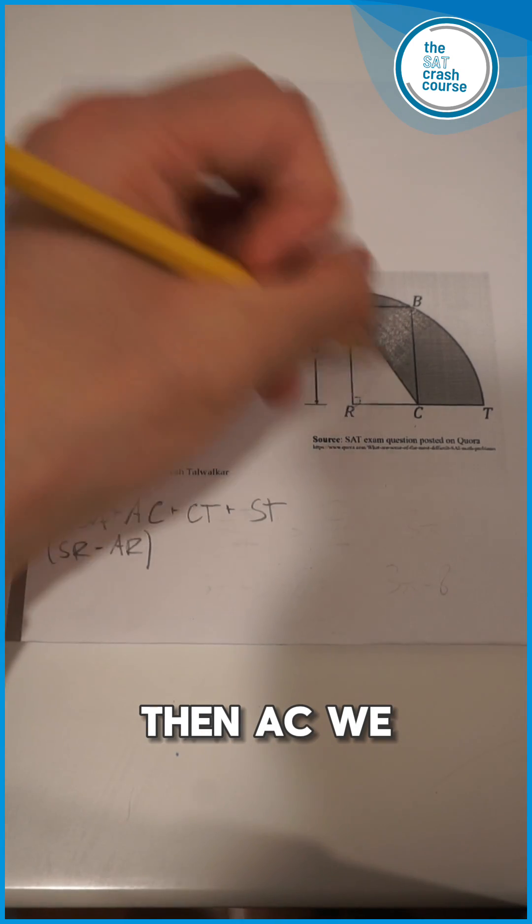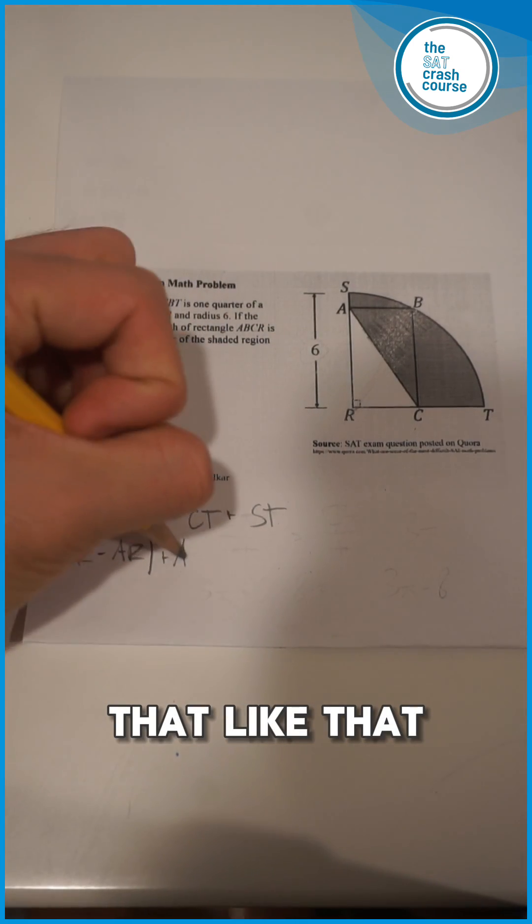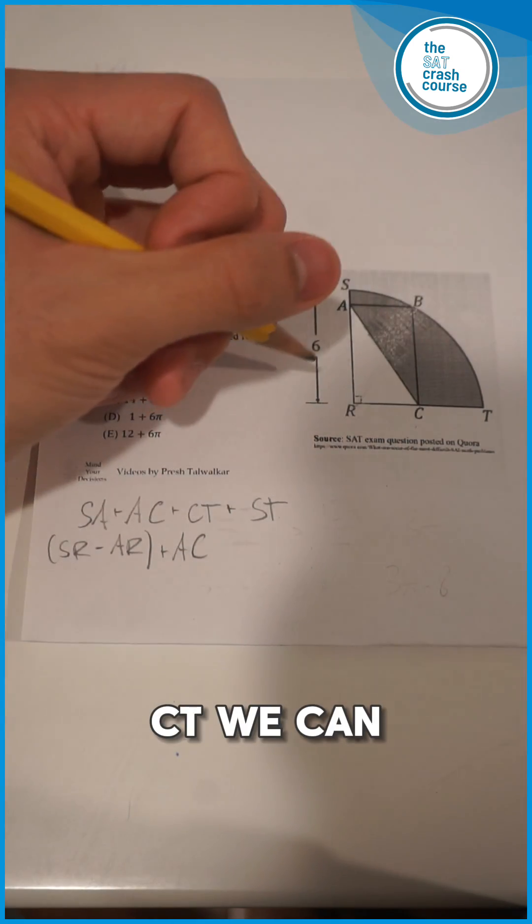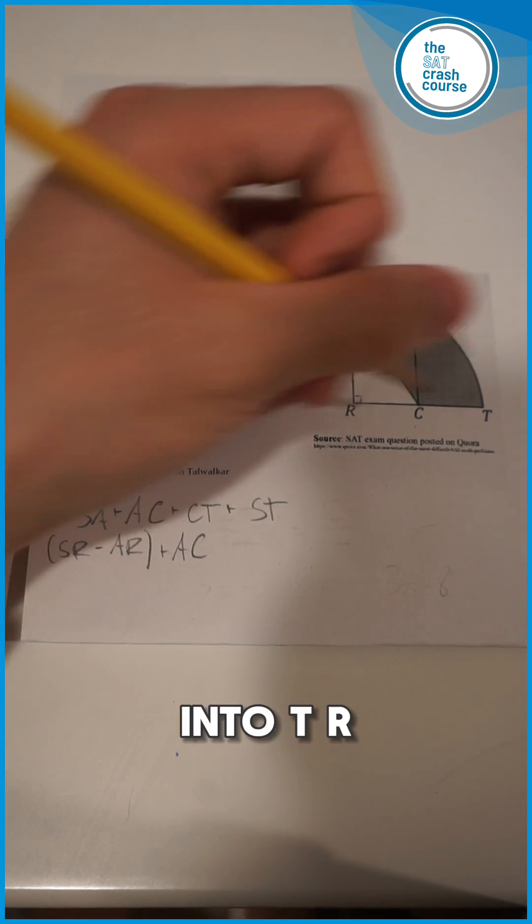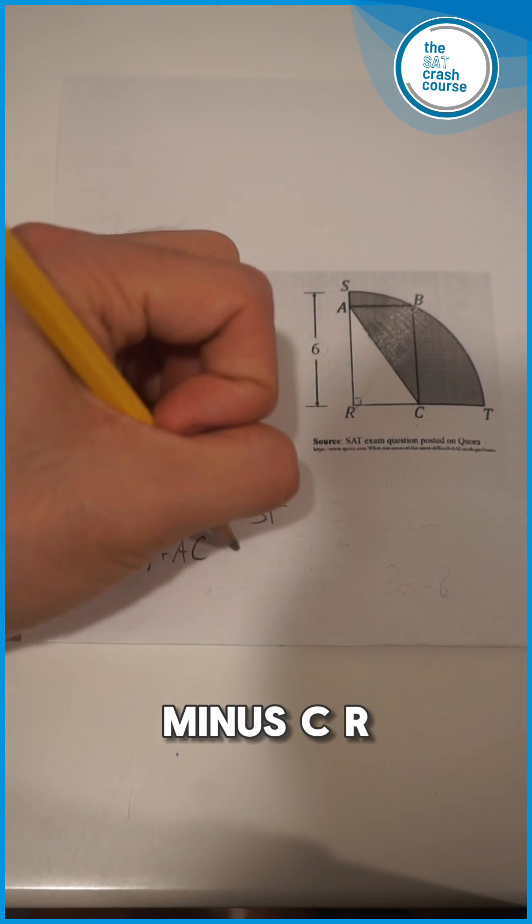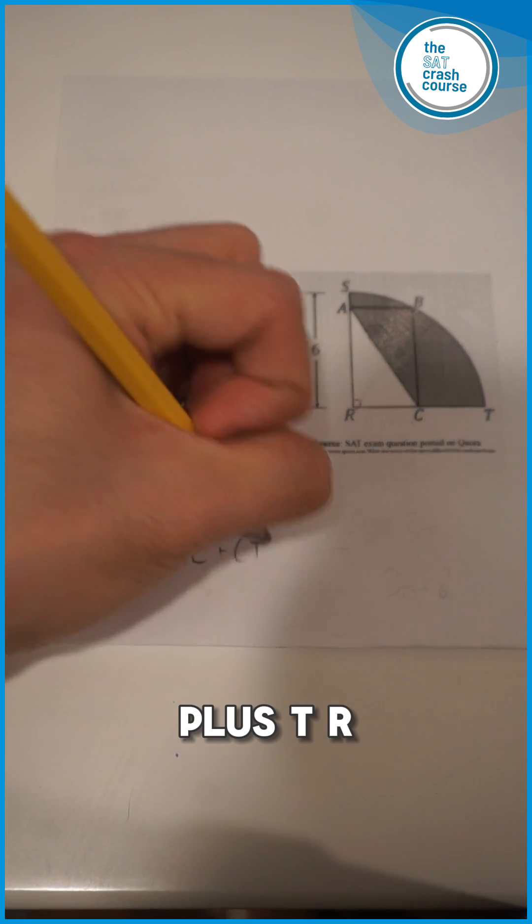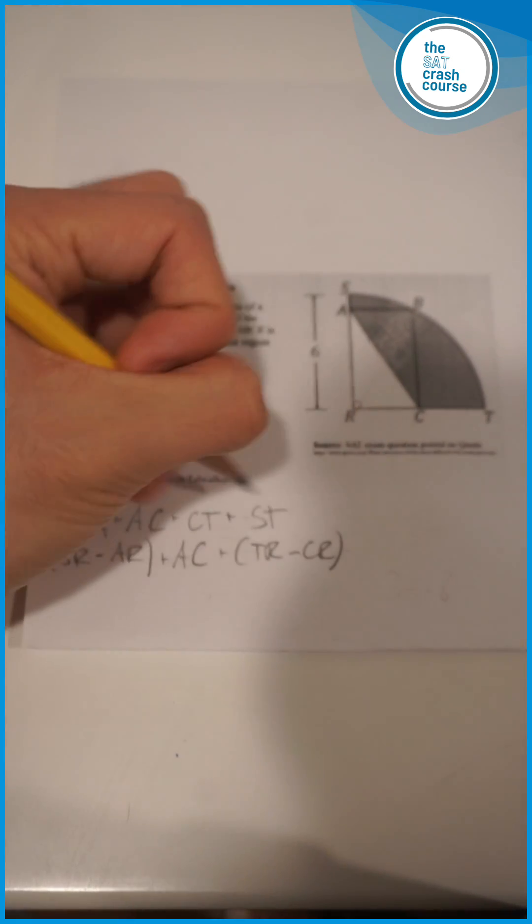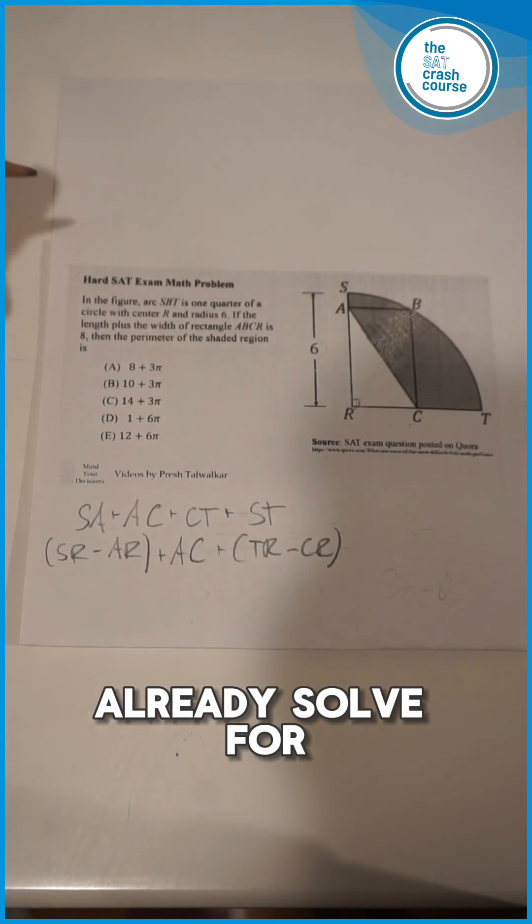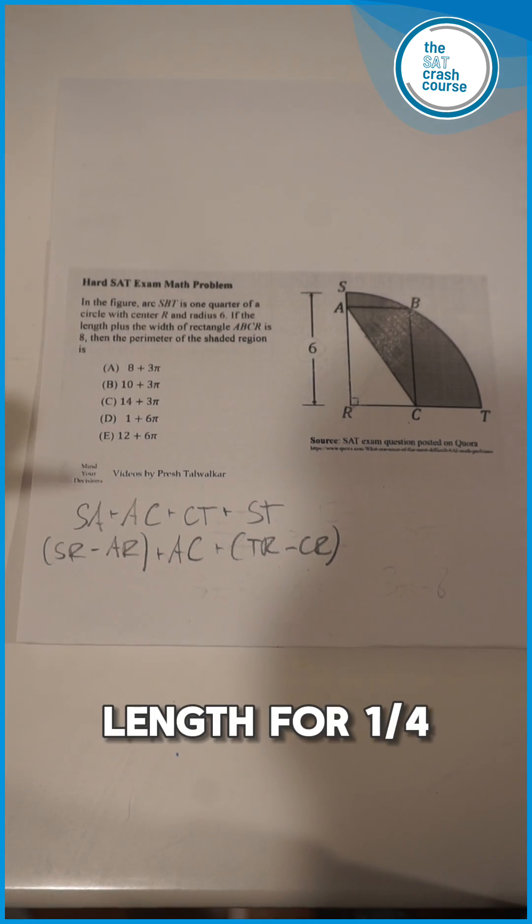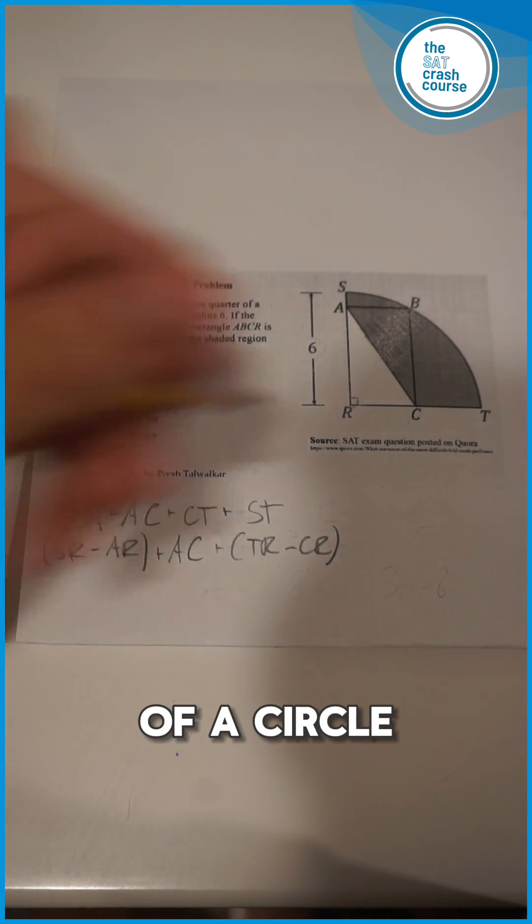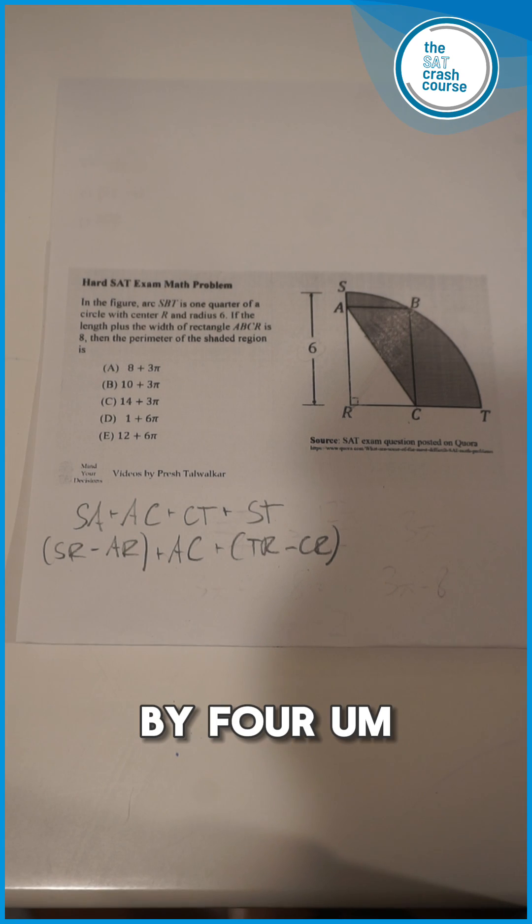So let's make it SR minus AR. Then AC, we can just keep that like that. CT, we can also do the same thing we did with SA and turn that into TR minus CR. And then ST, we can already solve for, as we know it's going to be the arc length for a quarter of a circle, which is 2πR divided by 4.